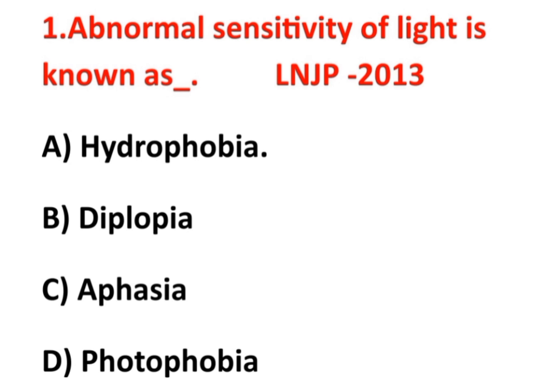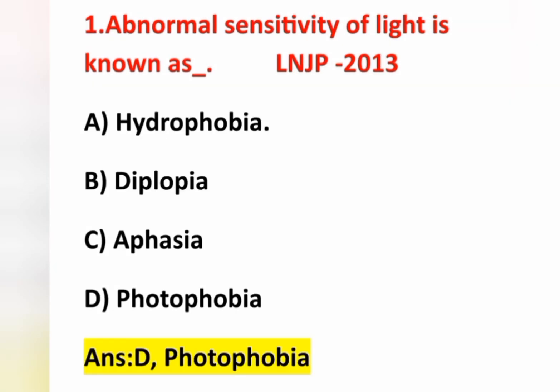First question: abnormal sensitivity of light is known as — option A hydrophobia, option B diplopia, option C aphasia, option D photophobia. The answer is option D, photophobia. Photophobia means abnormal sensitivity to light. Hydrophobia means fear of water, mainly seen in rabies. Diplopia means double vision. Aphasia is a disorder of communication.